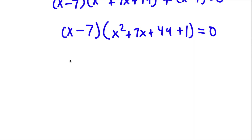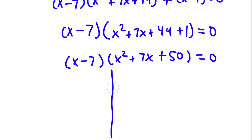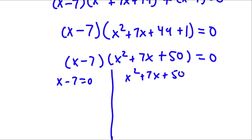Now 49 plus 1 is 50, so I have x minus 7 times x squared plus 7x plus 50 is equal to 0. This gives me two equations: x minus 7 equals 0, and x squared plus 7x plus 50 equals 0.